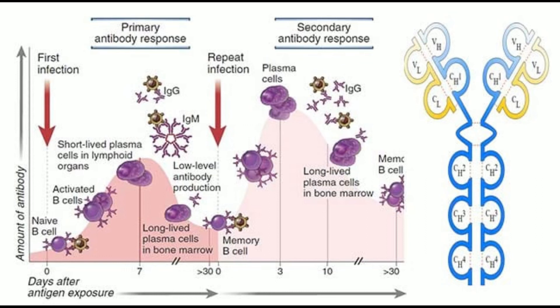Characteristic #10 - Amount of Antibody: Few antibodies are produced in the primary immune response. In the secondary immune response, 10 to 1,000 times more antibodies are produced.